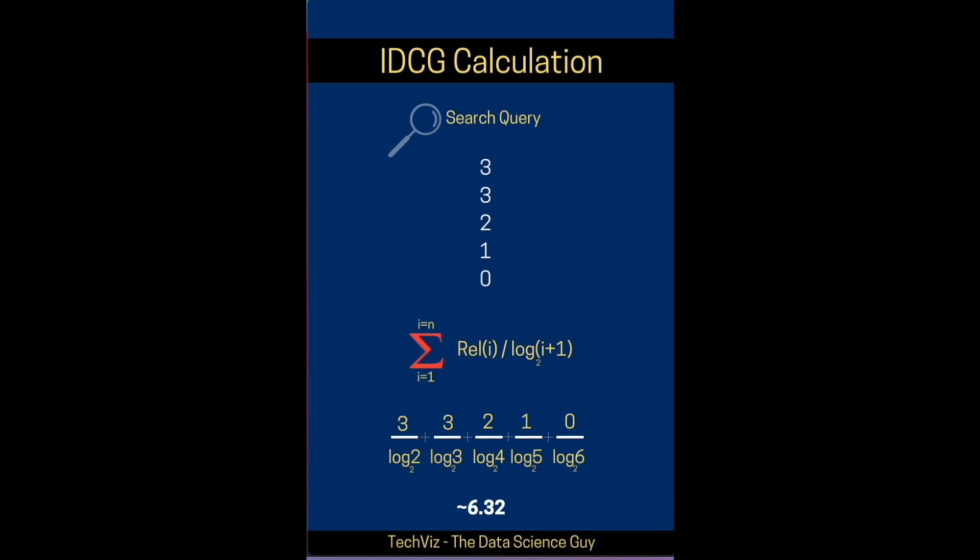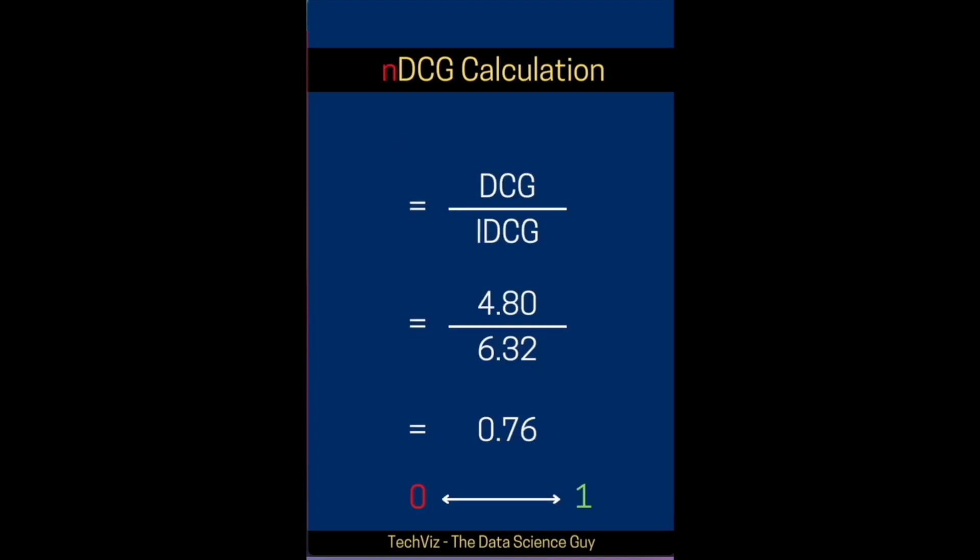But ideally, what should have been the DCG? That's the IDCG calculation. Here the relevance should have been 3, 3, 2, 1, 0, which means the top results are highly relevant and as we go down the results we mark them close to zero. So this calculation comes out to be 6.32, which is the maximum we can reach.